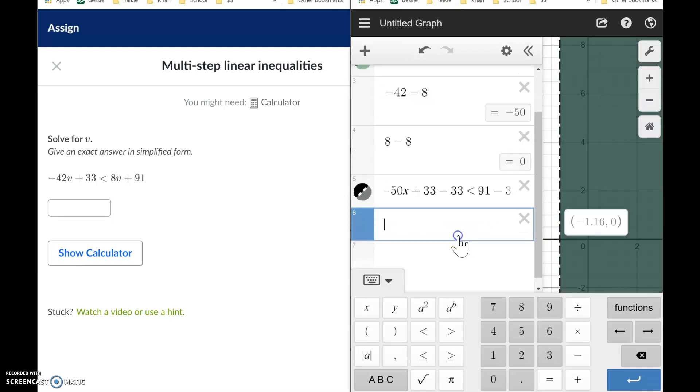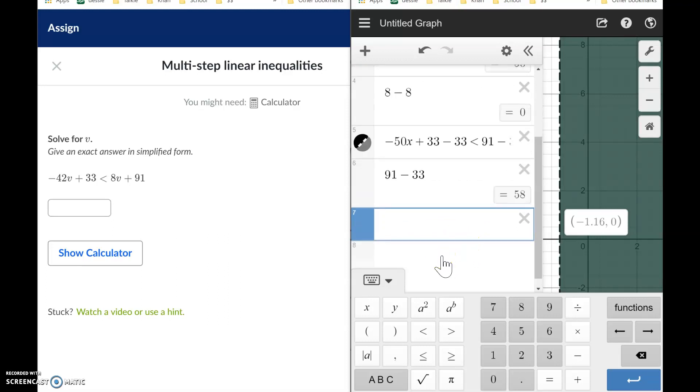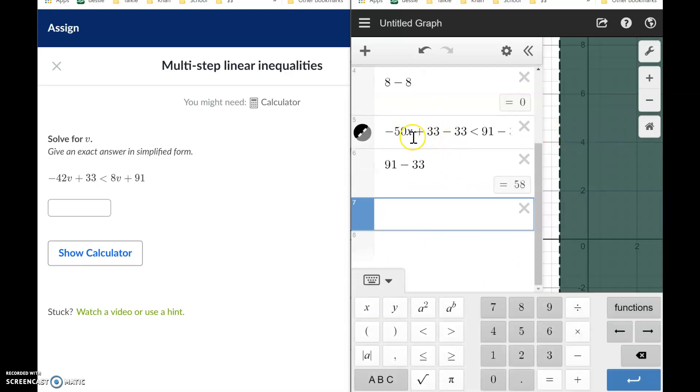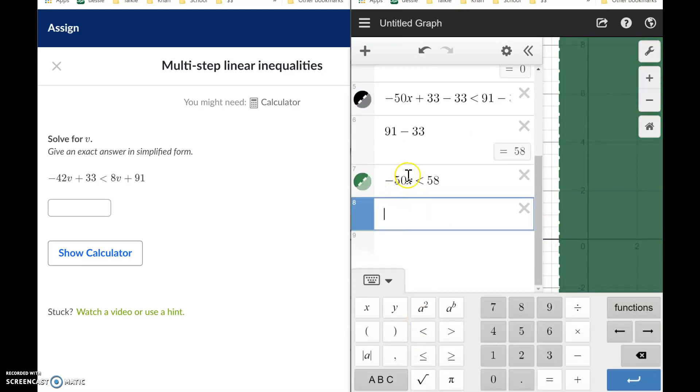Now let's do the math. We know those zero out. 91 minus 33 is 58. So I'm going to rewrite this inequality now. On this left side, those zeroed out, so we just got negative 50x is greater than 58. Let's see if it matches up. Boom, we're matching up.